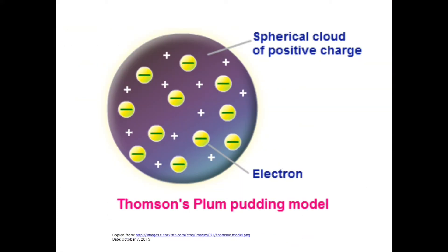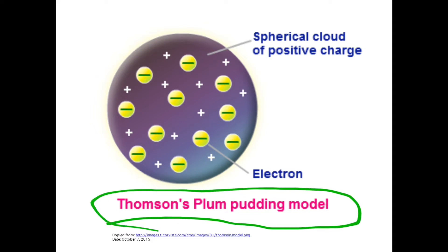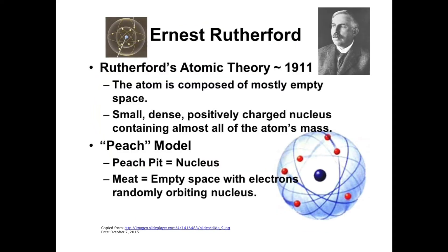This was Thompson atomic theory. In the picture shown here, you can see the Thompson plum pudding model. Remember: it is a sphere with positive charges inside, and negative electrons are embedded in the middle of that sphere — this is the plum pudding model, or Thompson model.